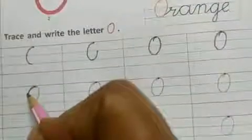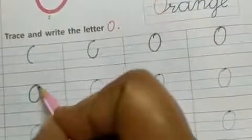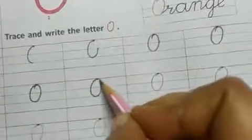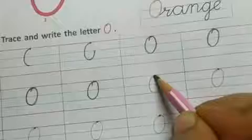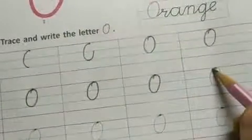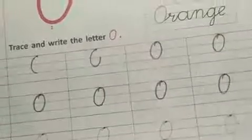So this way first you will trace where you have tracing, there you will make O. And then where there is no tracing, I will also tell you how to make it on dots. This became O, O for orange.